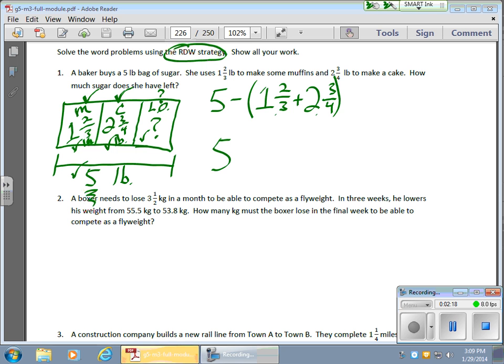I do notice I have different denominators. I have different sized pieces: thirds and fourths. I'm going to make twelfths out of these. Why is it twelve? Because three times four gives me that twelve.